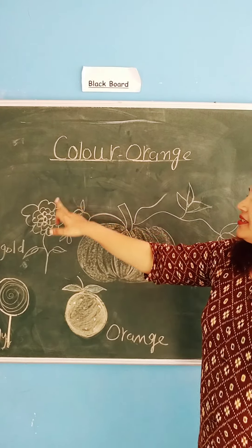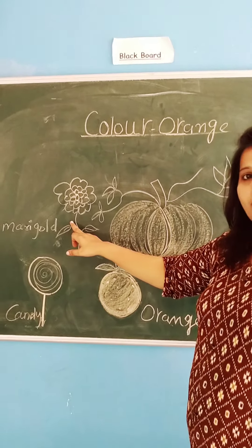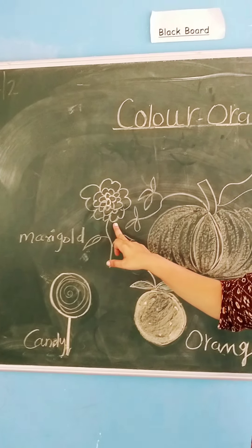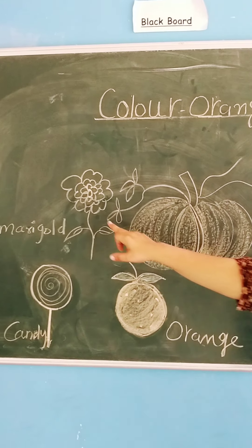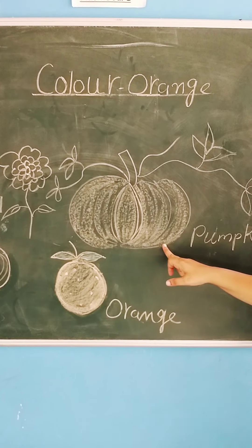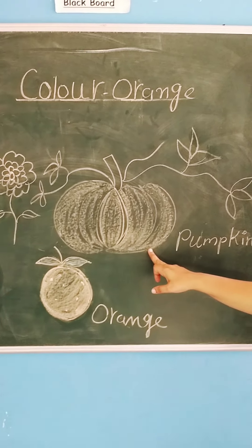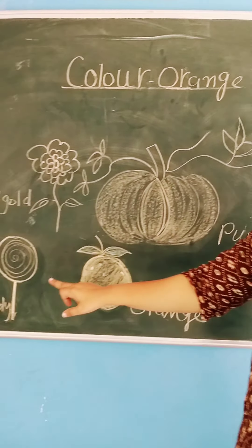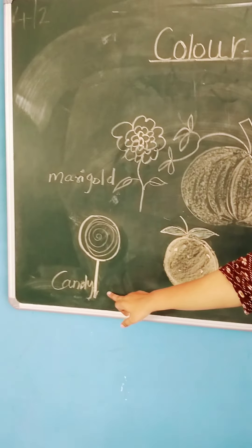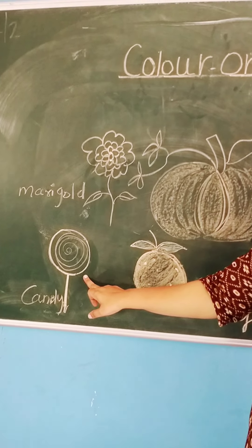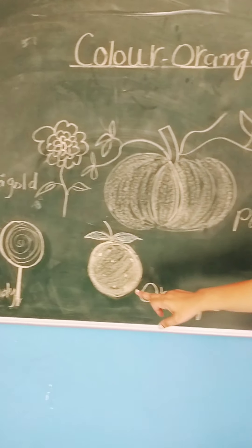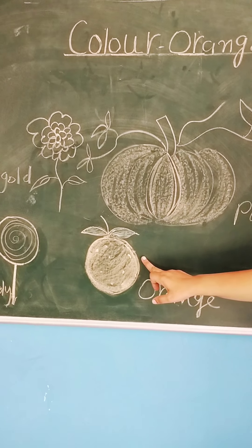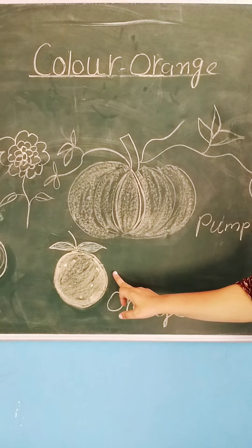See this? This is the marigold flower. What color is it? Orange. See this pumpkin. What color is the pumpkin? Orange. See this candy — this candy is orange color. Now see this fruit. This fruit is orange. It is orange color.